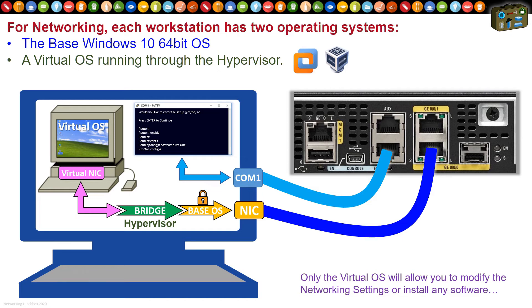So we use the physical base operating system for serial connectivity, and whenever we need to set up a PC with a static address and do pings and trace routes, we use the virtual operating system.